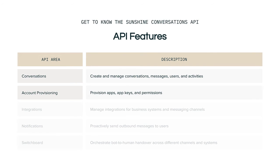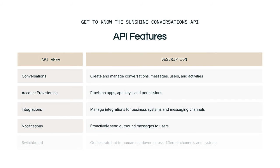With account provisioning, you can provision apps, app keys, and permissions. Integrations allows you to manage integrations for business systems and messaging channels. With the Notifications API, you can proactively send outbound messages to users. You can use Switchboard to orchestrate bot and human handover across different channels and systems. And there are many more features not included in this list.